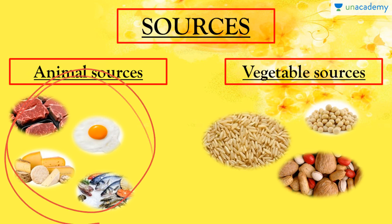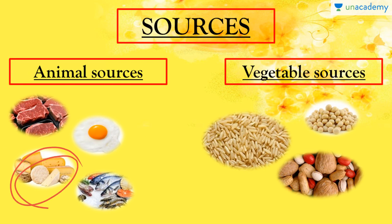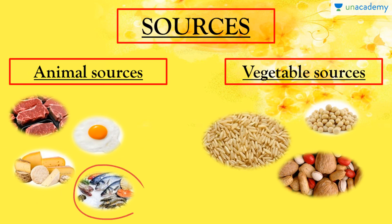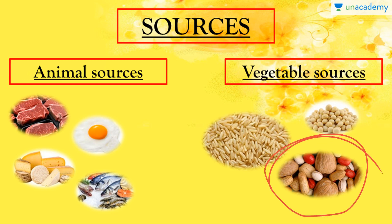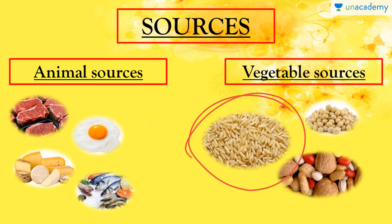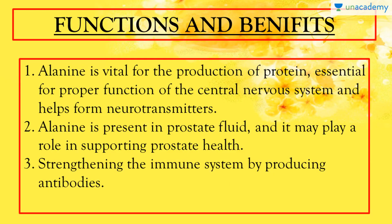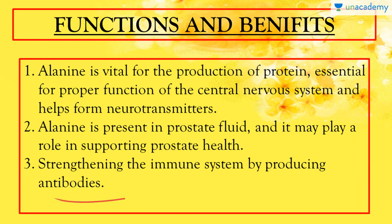Animal sources of alanine include beef, cheese, eggs, fish, and seafood, while vegetable sources include chickpeas, nuts, dry fruits, and brown rice. The functions of alanine mainly include the production of protein, central nervous system development, and acting as a neurotransmitter. It is also present in the prostate fluid and may play a role in supporting prostate health. Additionally, alanine helps strengthen the immune system by producing antibodies.